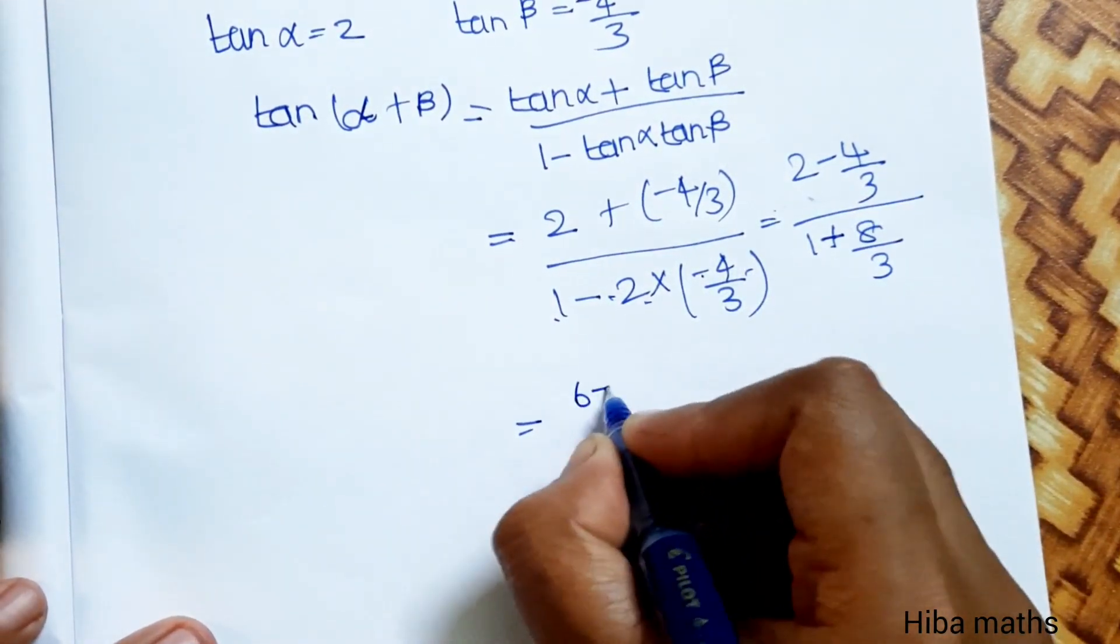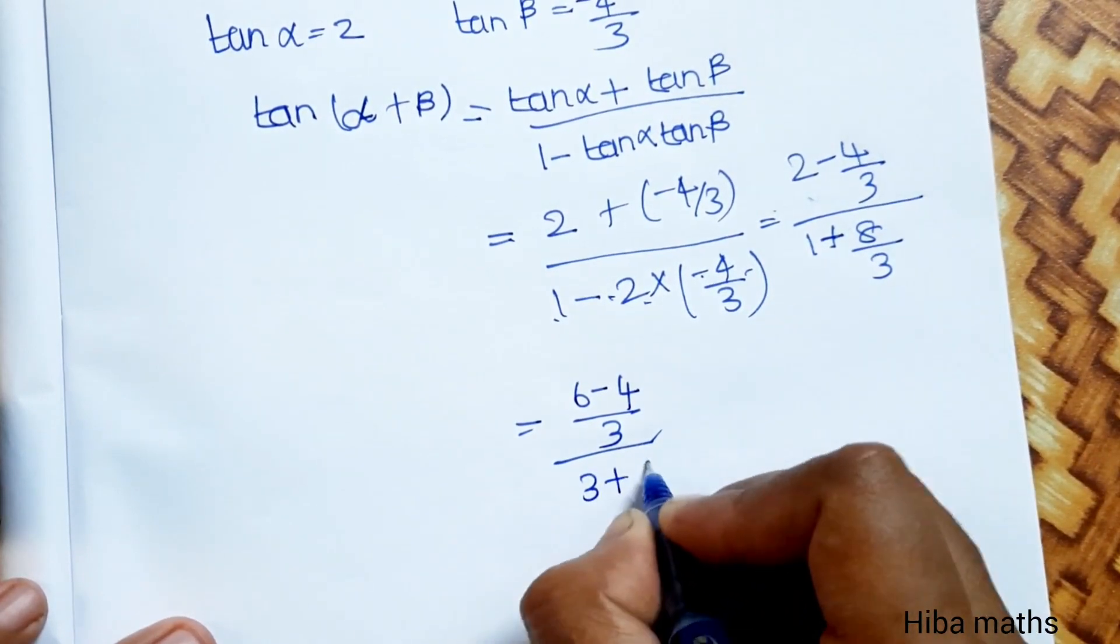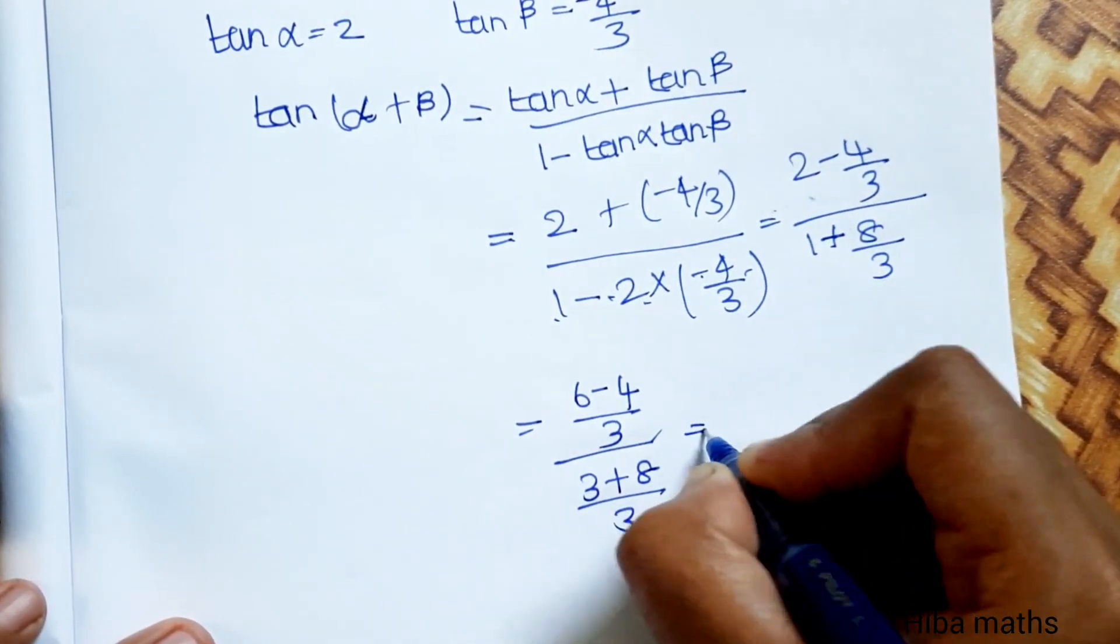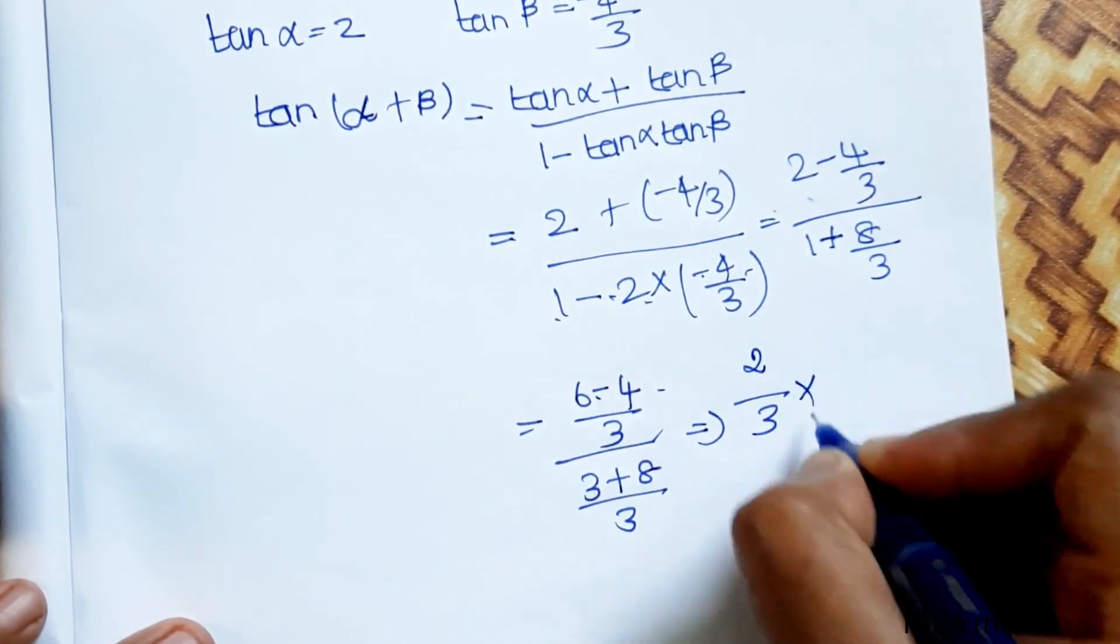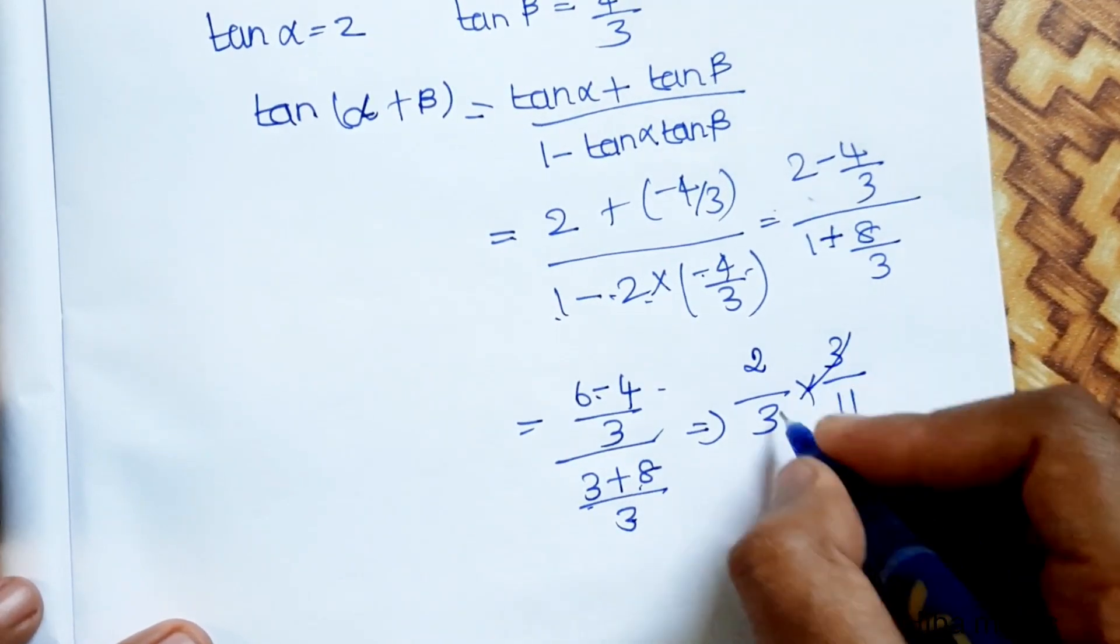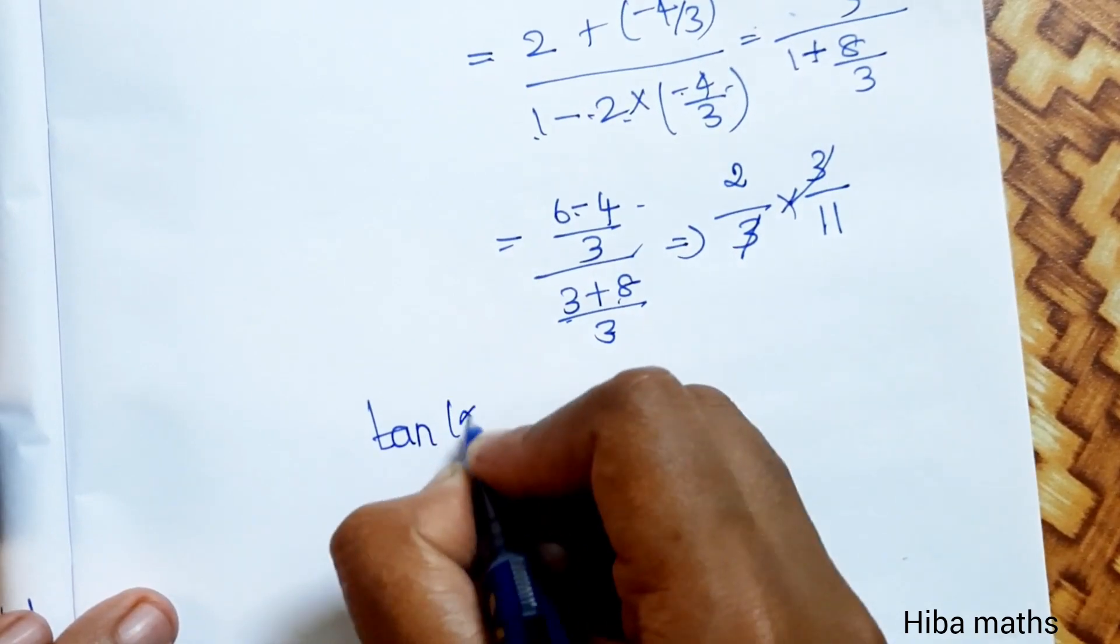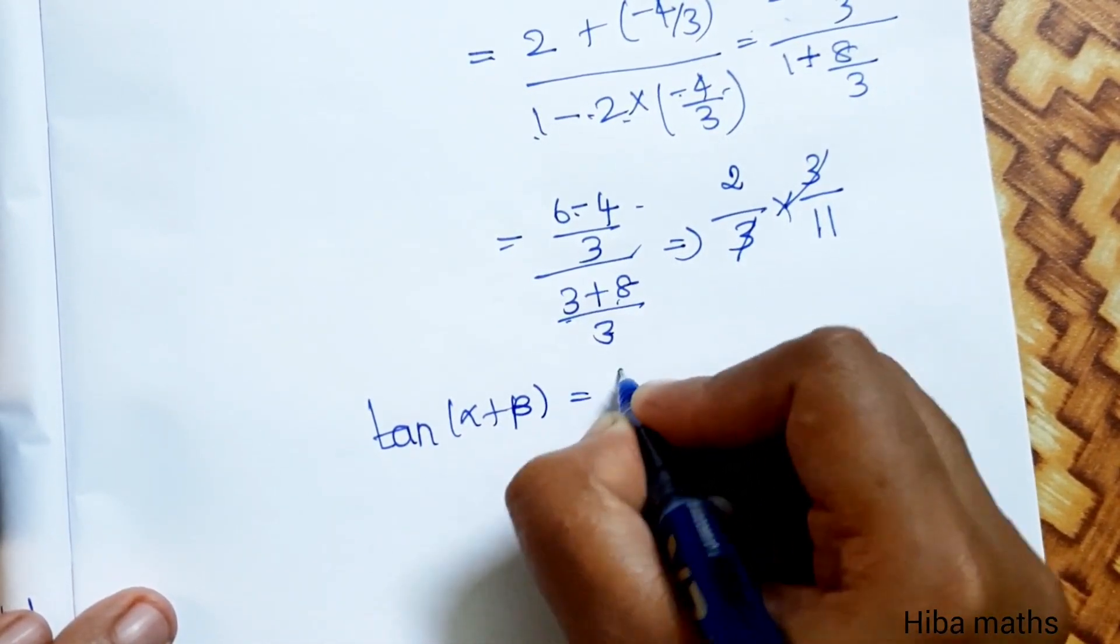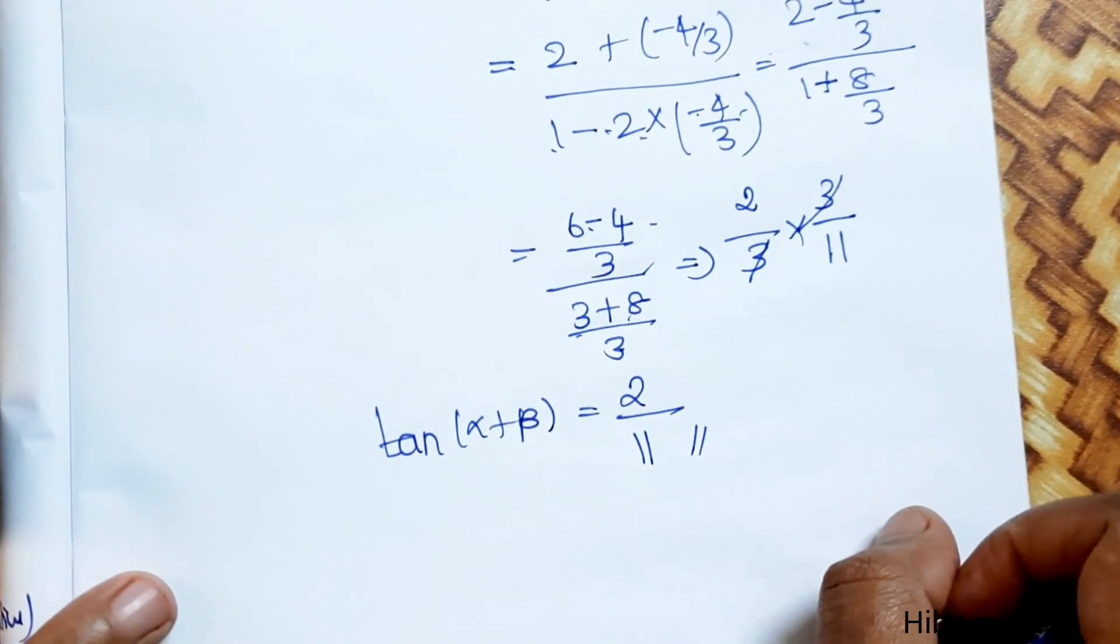This gives (6 - 4)/3 divided by (3 + 8)/3, which is 2/3 divided by 11/3. Taking the reciprocal, 3 cancels out, leaving 2/11. Therefore, tan(α+β) equals 2/11. Thank you so much for watching.